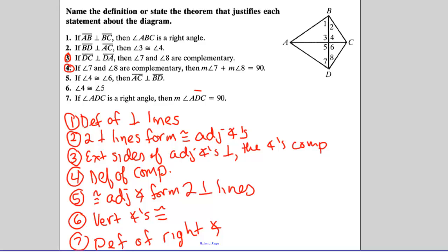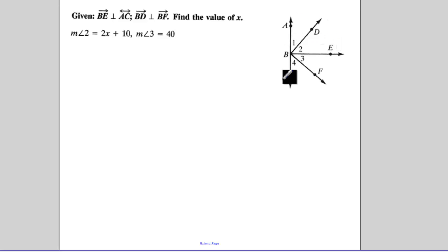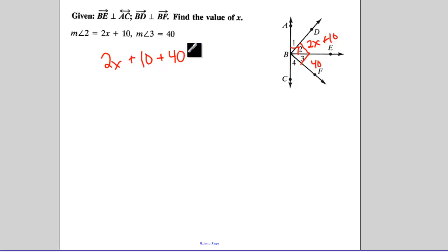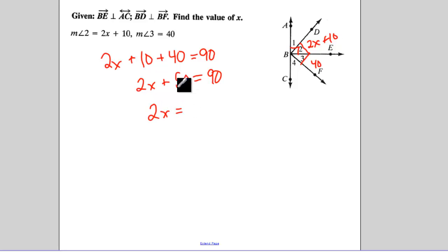Now some algebra involving this. If BE is perpendicular to AC — mark up that diagram — and BD is perpendicular to BF — mark up that diagram — find the value of X. Angle two is equal to 2X plus 10, and angle three is equal to 40. We know if the exterior sides are perpendicular, the angles inside are complementary. So 2X plus 10 plus 40 has to equal 90. So 2X plus 50 equals 90, meaning 2X equals 40, therefore X equals 20.